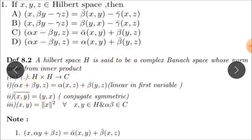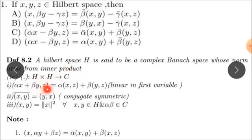In the inner product, there is linearity in the first variable. In the note, the second variable is linear — this is linear, but it is conjugate linear. In the first variable, the first variable is fixed. This is the second variable. If we look at the second variable, the first variable is fixed.